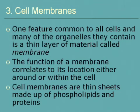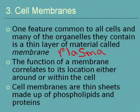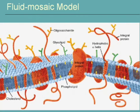One feature common to all cells is a thin layer of material called the membrane — also called the plasma membrane, cell membrane, lipid bilayer, or fluid mosaic. The function of a membrane correlates to its location around or within the cell. Cell membranes are thin sheets made up of phospholipids — lipid meaning fat — and proteins. There are two layers of phospholipids, making it a bilayer.